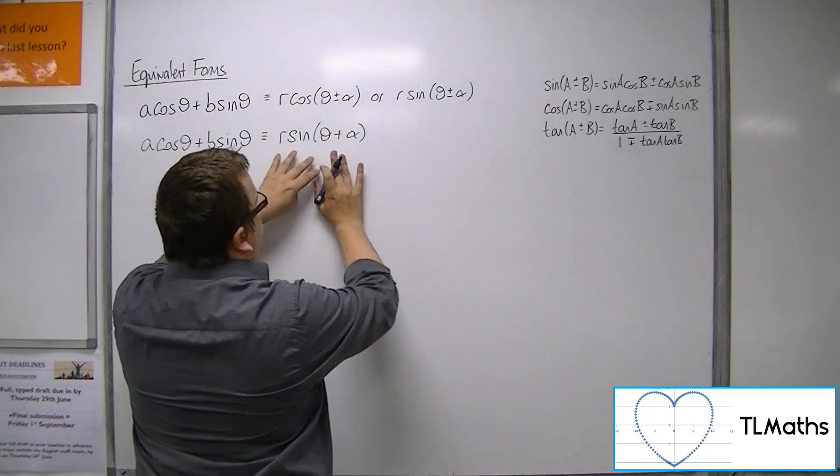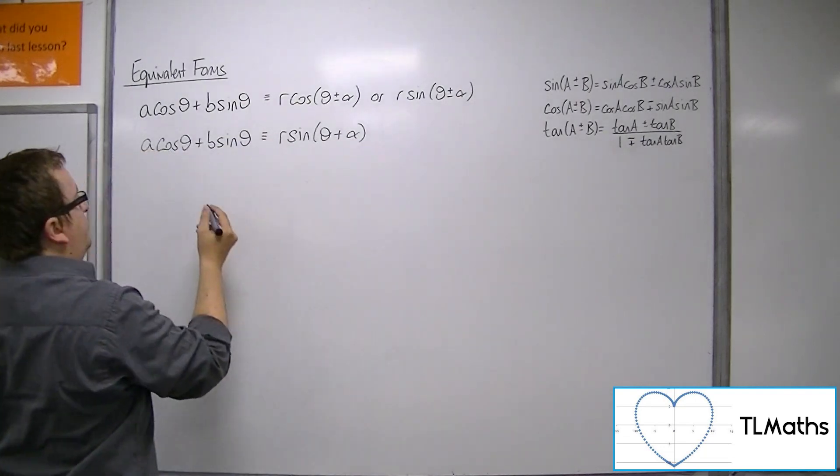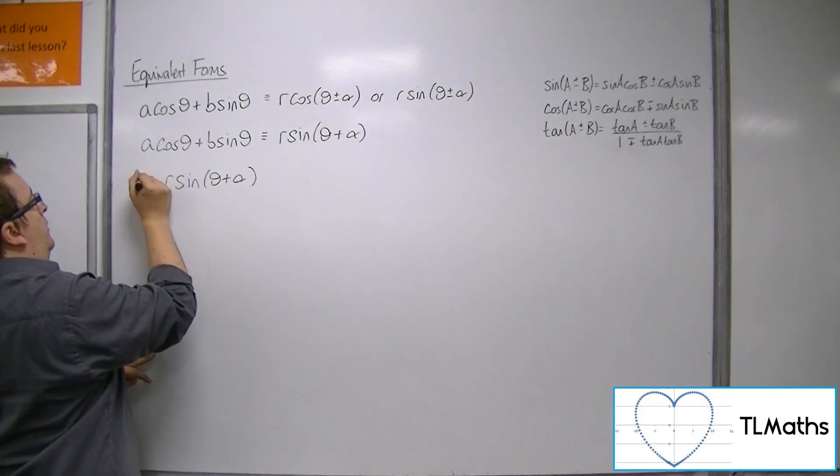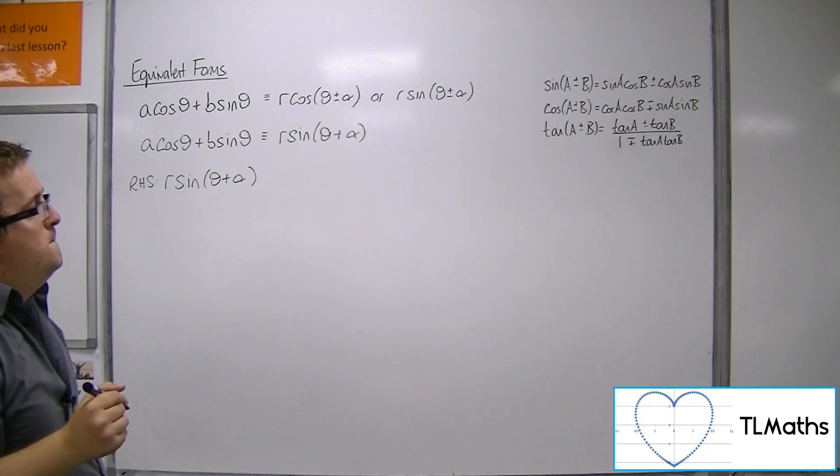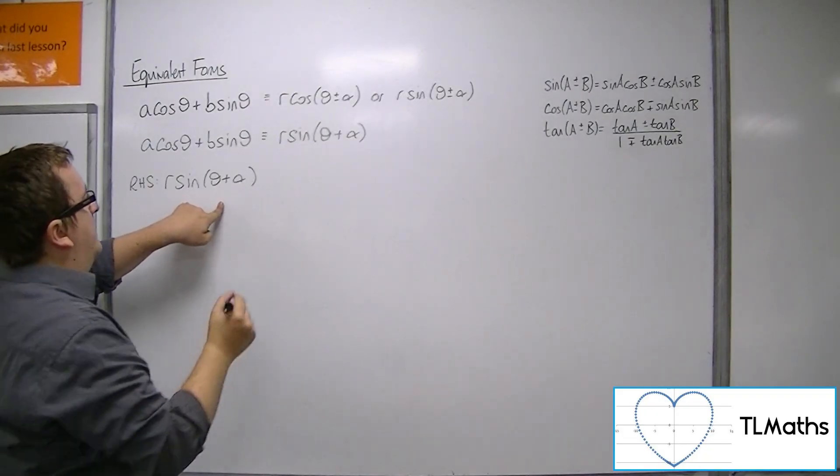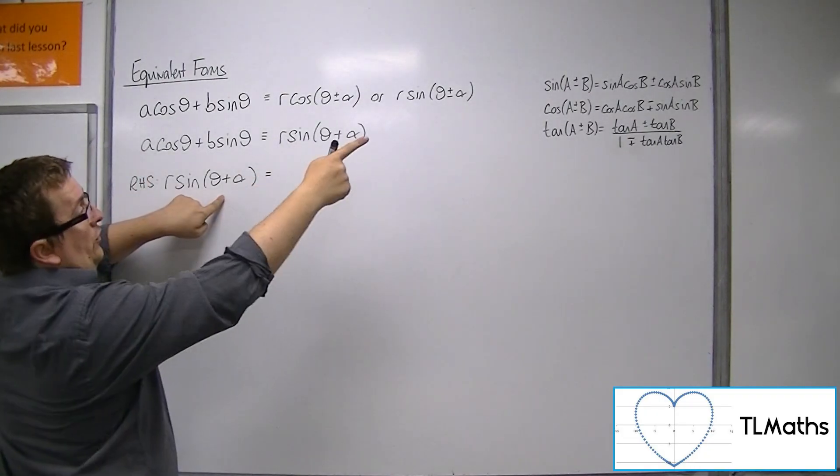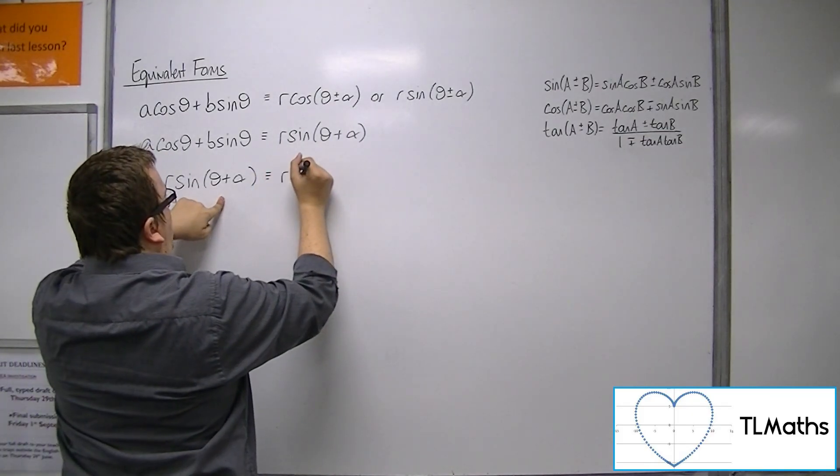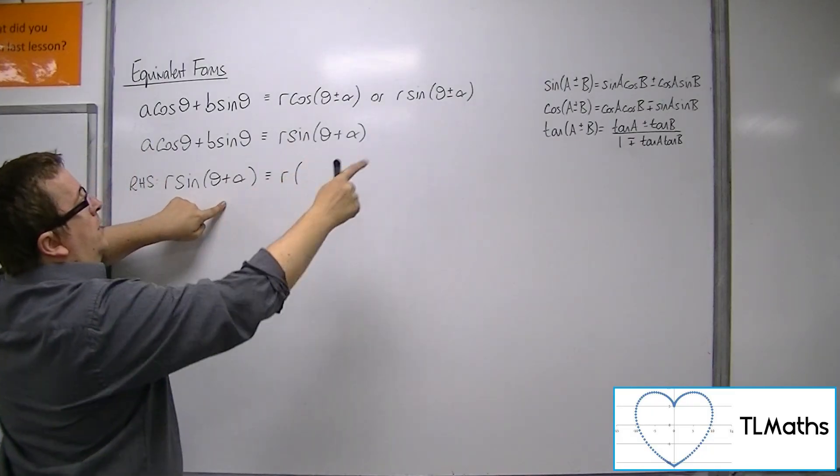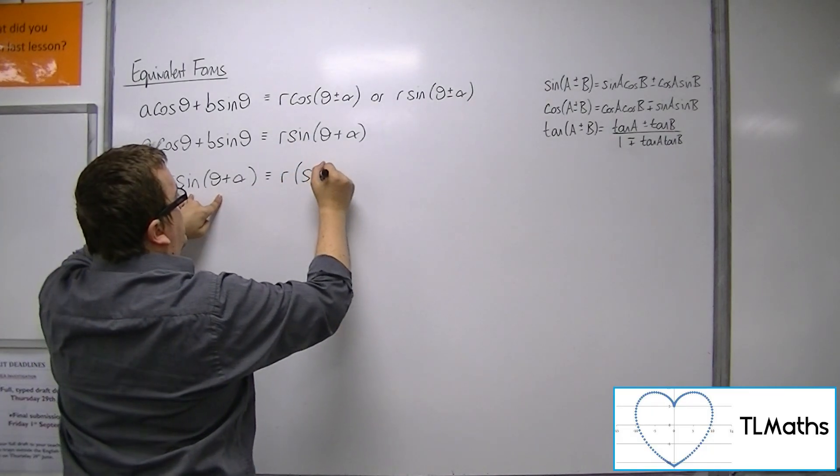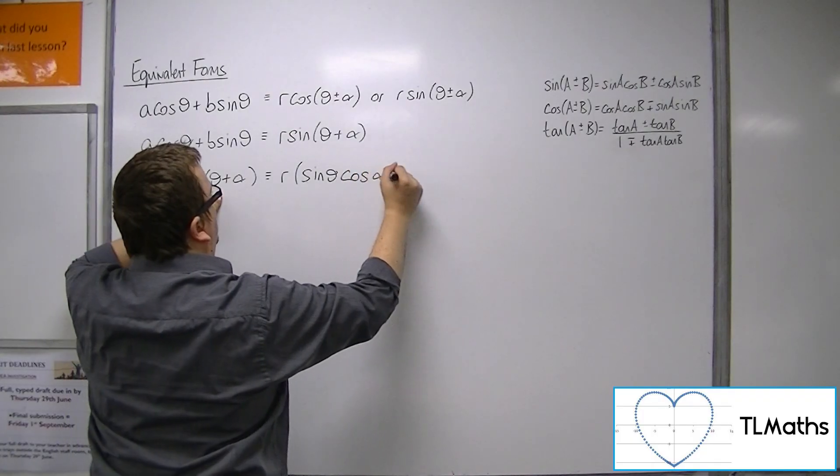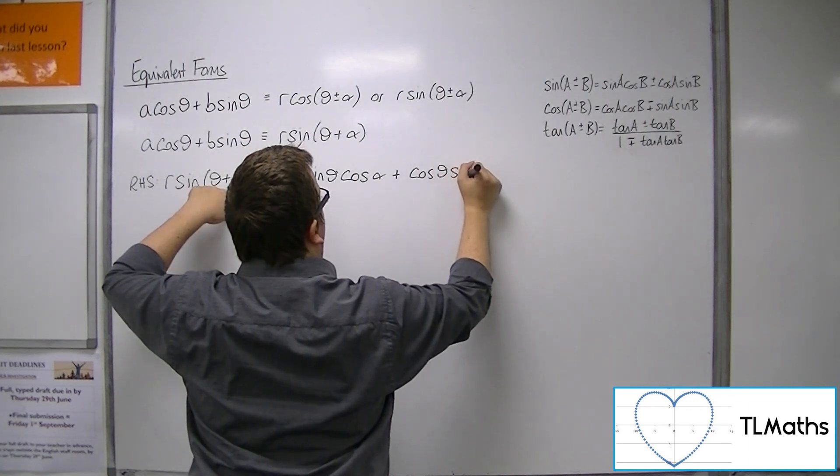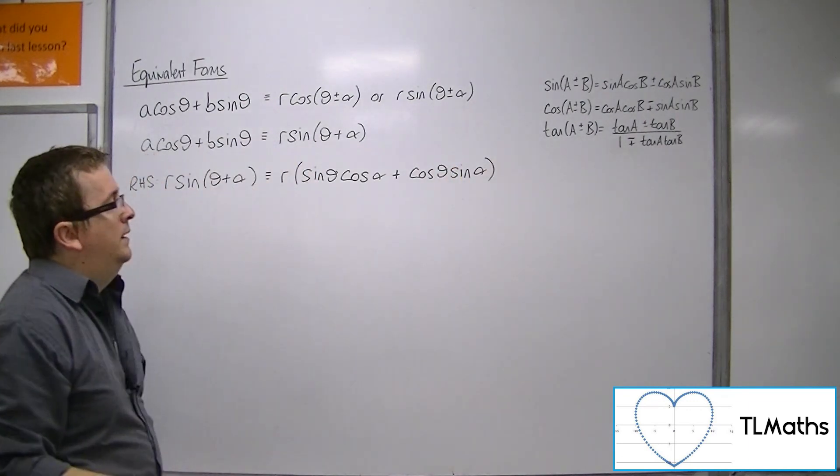So if we start with the right-hand side, r sine theta plus alpha. So starting with the right-hand side, if I rewrite this, I can write this using my compound angle formulae. So that's r lots of sine theta cos alpha. And because that's plus, this will be plus cos theta sine alpha.